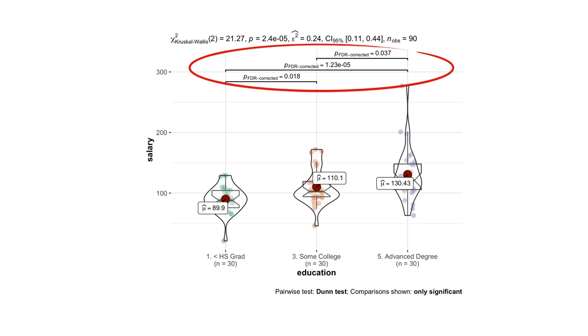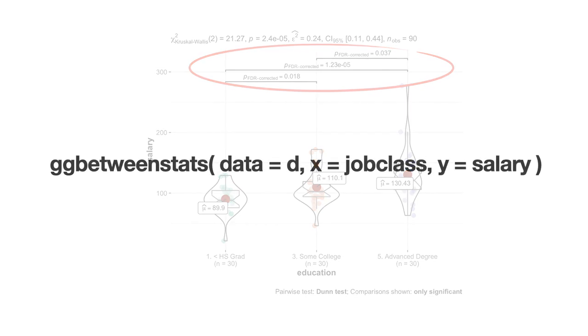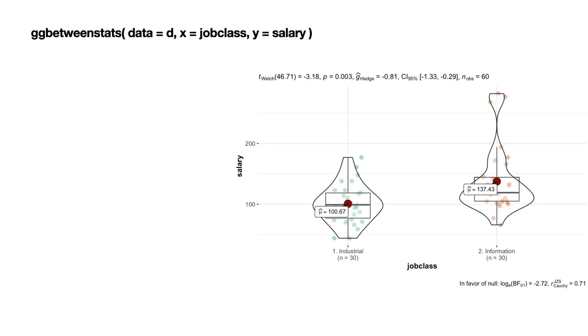In the previous video on box plots, I promised you to show how to produce a very fancy box violin plot with statistical details in only one line of code. Here is this line. And here is the result of it. What do we see here? Well, first of all, we see only three arguments in this line of code.